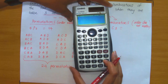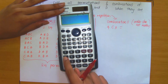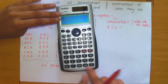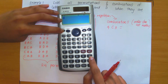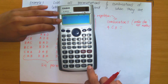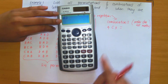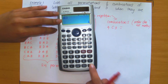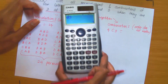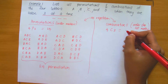Entering this into the calculator — I've entered four, selected C for combination, followed by three, so 4 choose 3 has been entered. Pressing equals gives an answer of four. So we are only going to have four combinations when choosing three letters from A, B, C, and D.